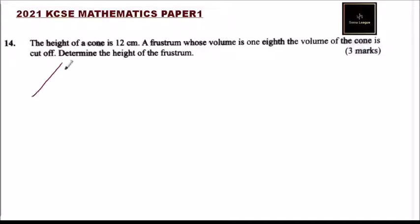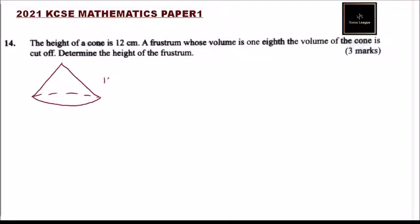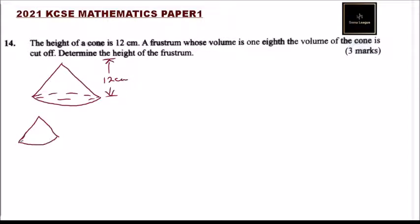We can start by making a sketch so that we can understand the question better. This is the cone, and the height is 12 centimeters. Then a frustum was cut off, so it means it ended up having a small cone and a frustum.